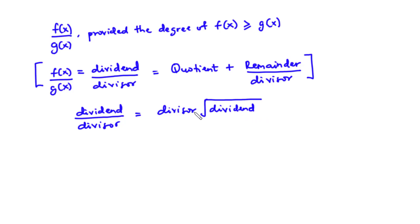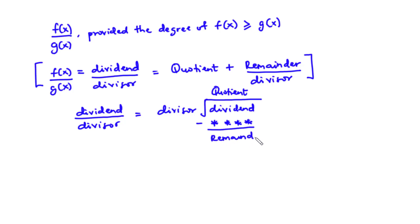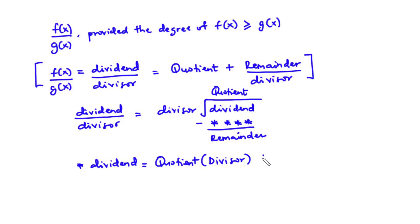The dividend divided by the divisor gives a whole number value or an expression we call the quotient. Now the quotient times the divisor gives an expression — let's represent that expression with stars — so that the dividend minus that expression gives what we call the remainder.